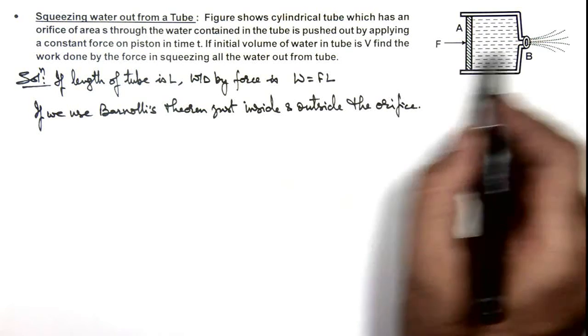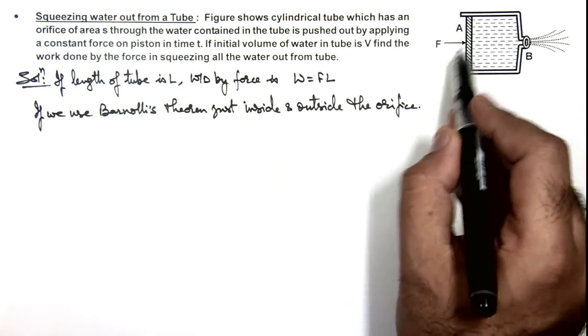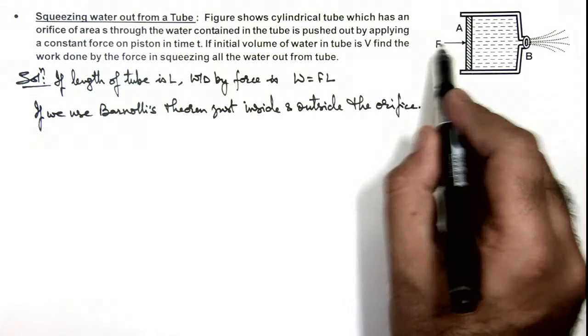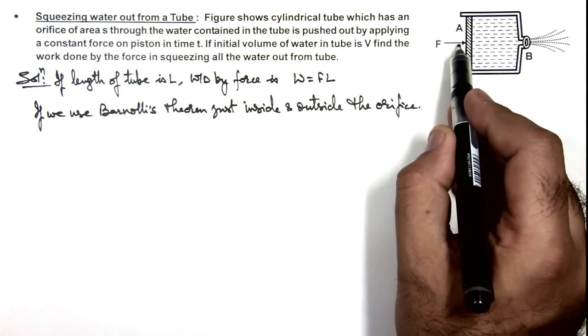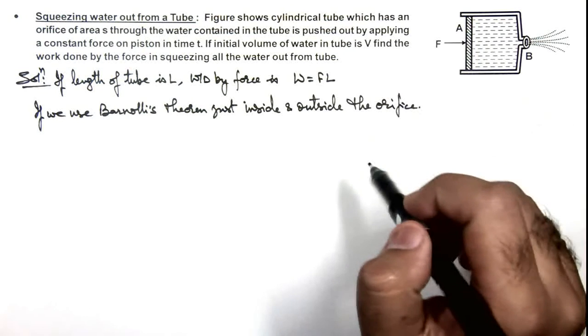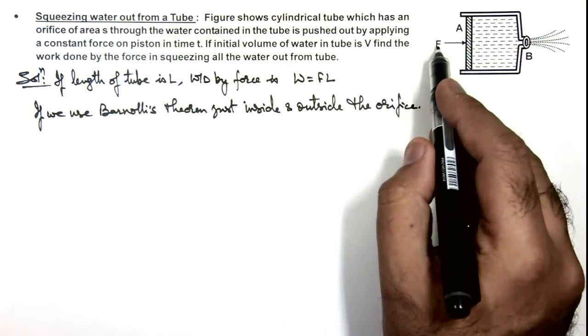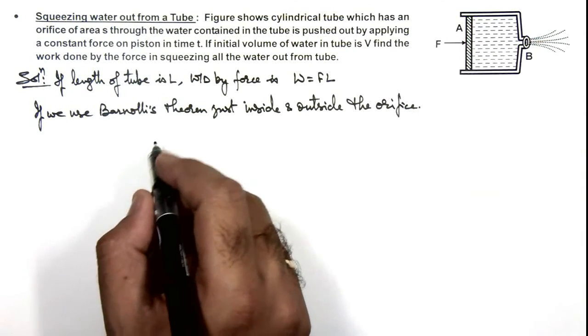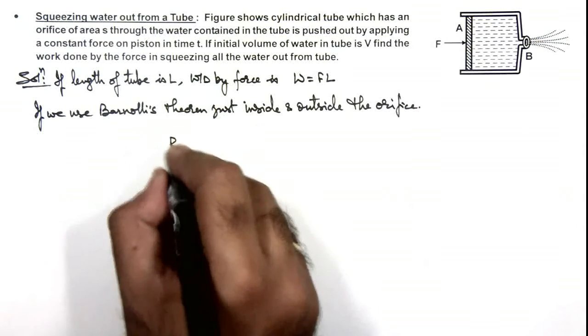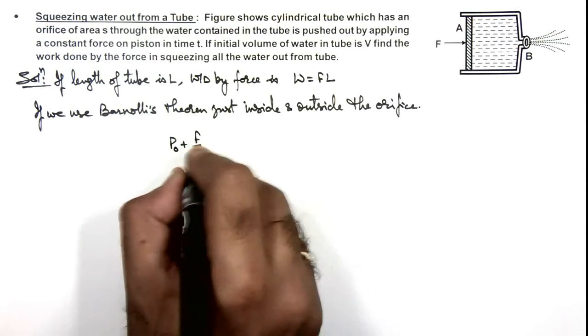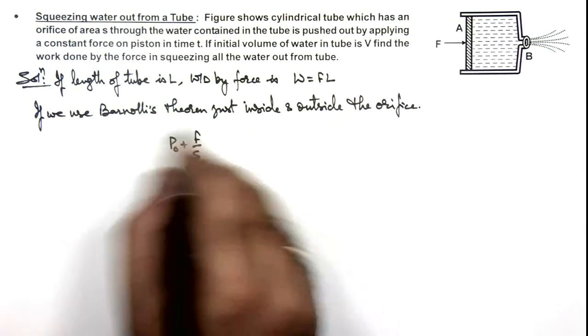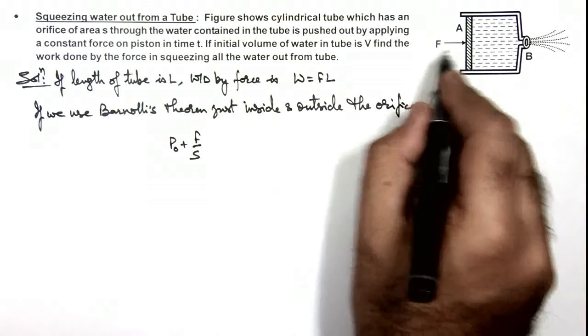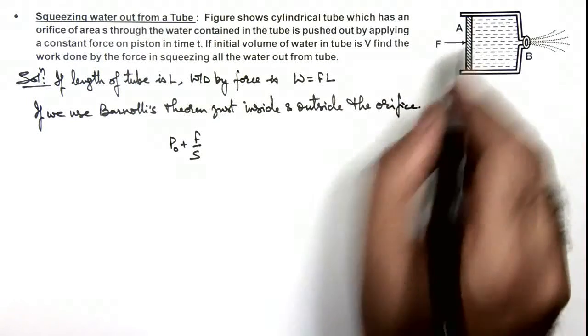The pressure will be P atmospheric plus the force applied by external agent, giving us an excess pressure F upon s. So we can write the pressure inside the orifice is P₀ plus F by s, which is the pressure just inside due to external atmospheric pressure plus due to the external force.